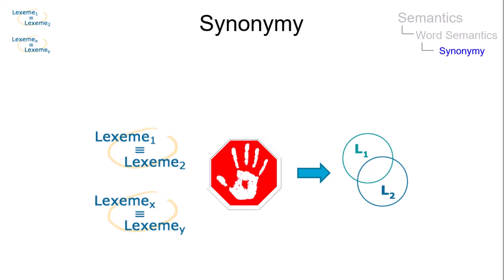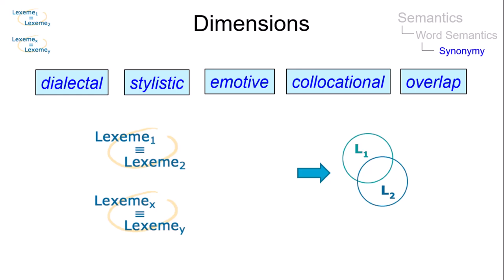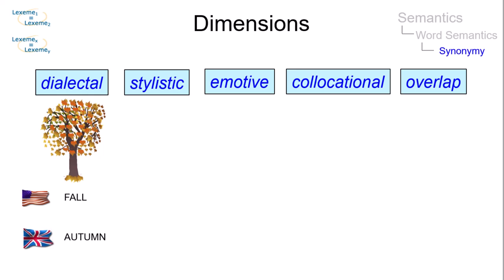There are several dimensions according to which possible synonyms can differ. Autumn and fall are used in different varieties of English. The use of gentleman and chap depends on stylistic aspects, and statesman and politician have different emotive extensions.